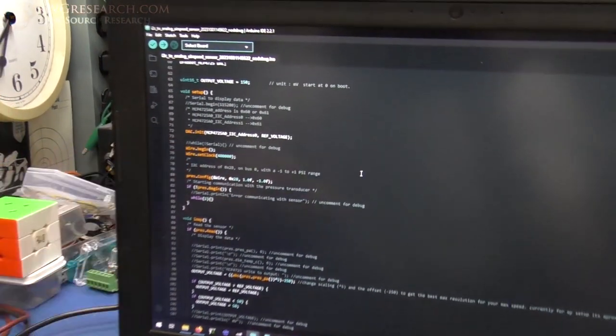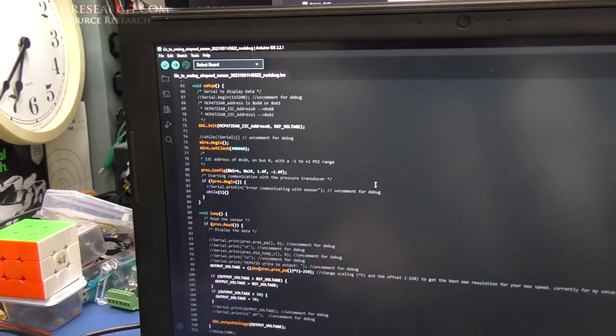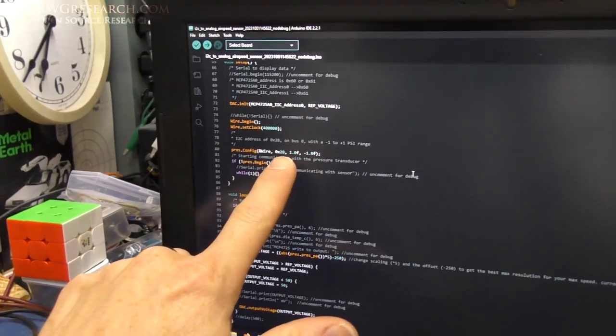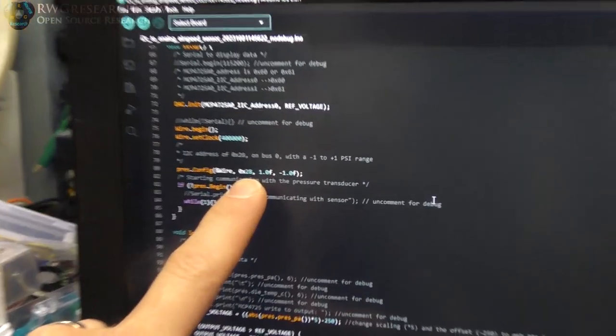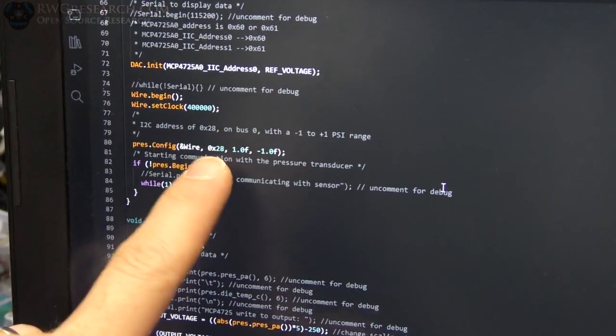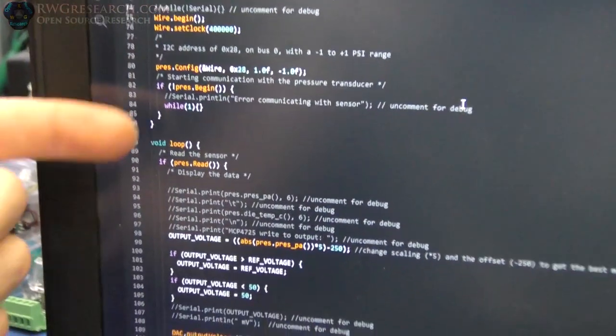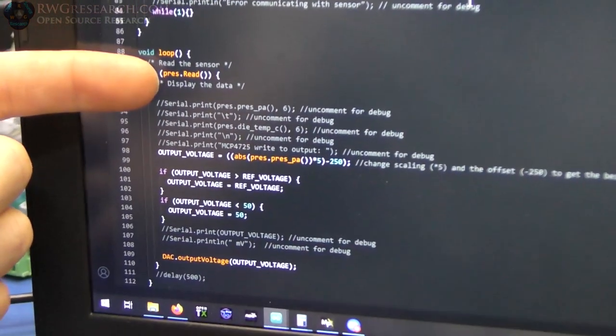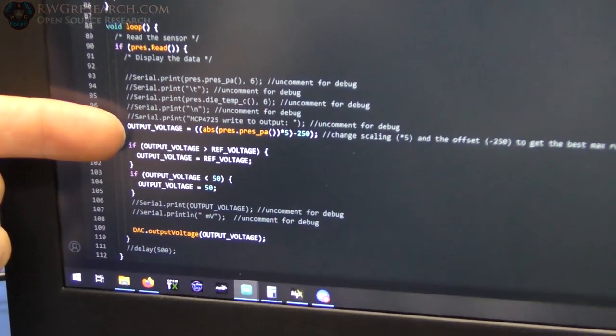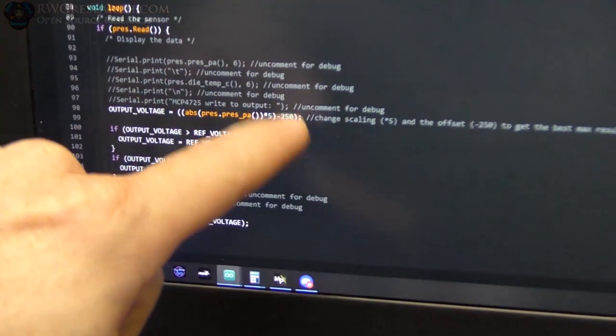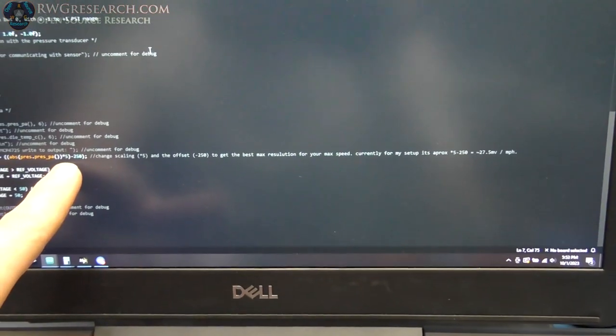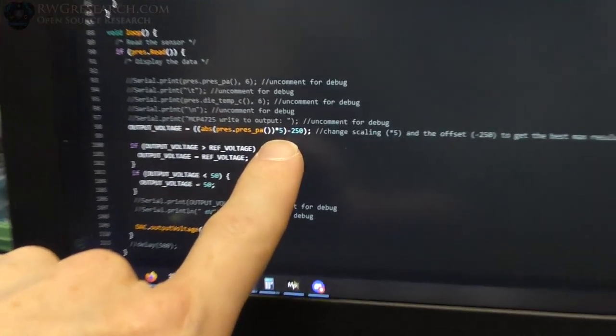So we set that up, we set the clock up to 400 kHz, that's what we're running at. But we set the proper pressure transducer address. And then real simple, we read the pressure, and then we take the pressure, and I've done some scaling here, you can read that if you wish. But this code will be in the description, I'll post it somewhere.